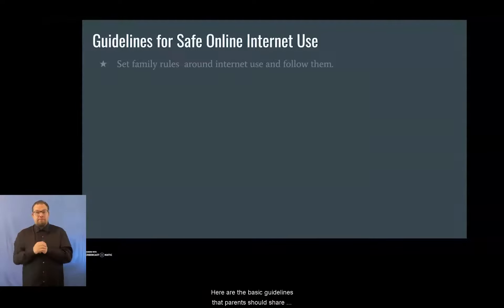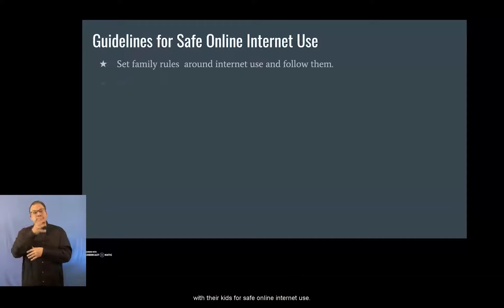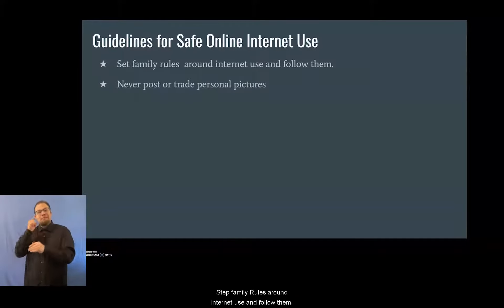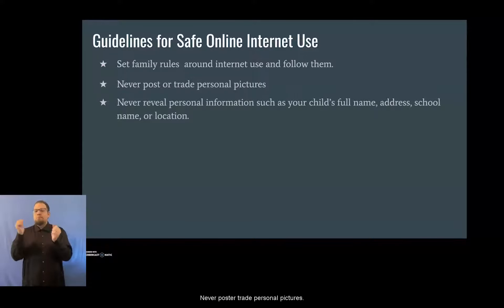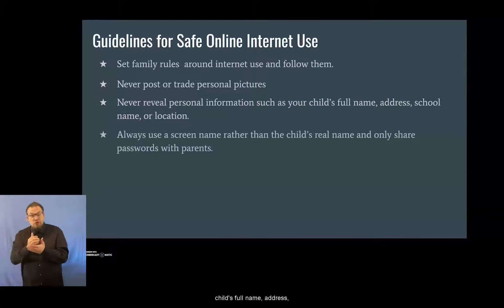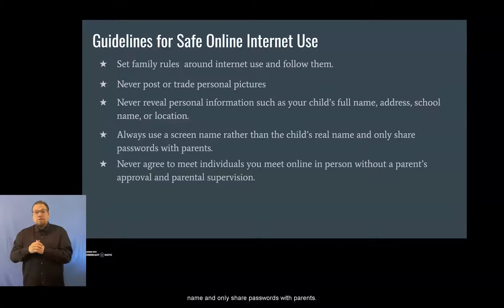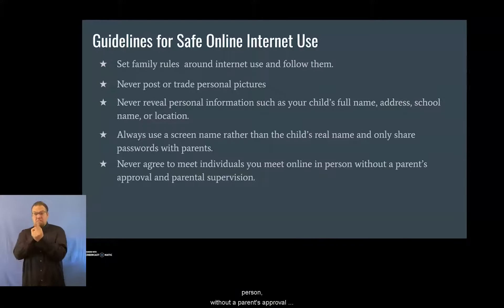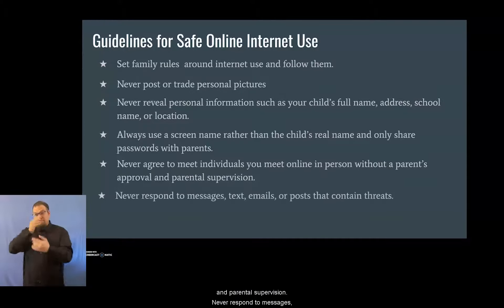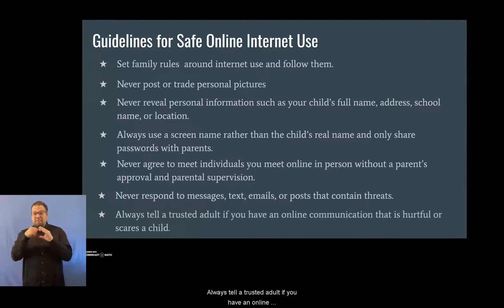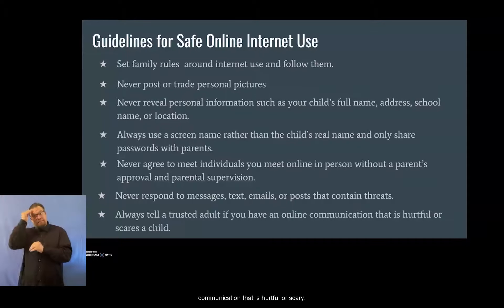Here are the basic guidelines that parents should share with their kids for safe online internet use. Set family rules around internet use and follow them. Never post or trade personal pictures. Never reveal personal information such as your child's full name, address, school name, or location. Always use a screen name rather than the child's real name, and only share passwords with parents. Never agree to meet individuals you meet online in person without a parent's approval and parental supervision. Never respond to messages, texts, emails, or posts that contain threats. Always tell a trusted adult if you have an online communication that is hurtful or scary.